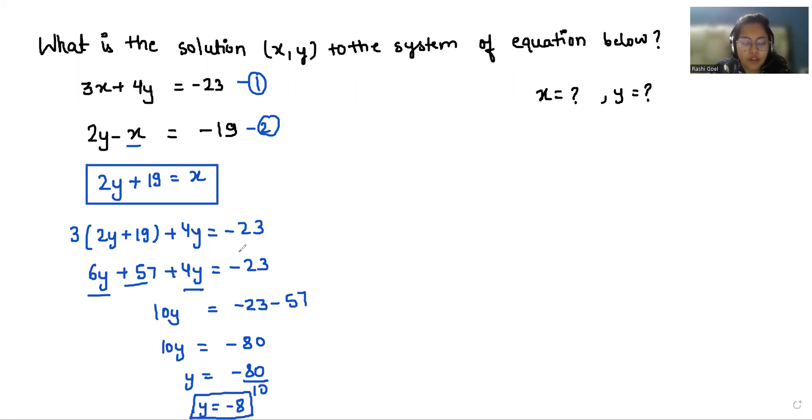Now I'm going to put the value of y is equals to minus 8 here. So x is equals to 2y plus 19. So 2 times minus 8 plus 19. So minus 16 plus 19. The value of x is 3.